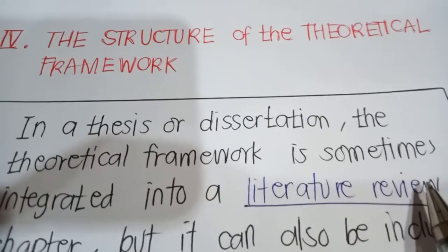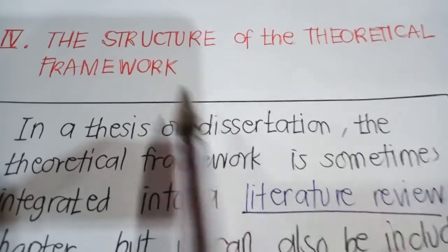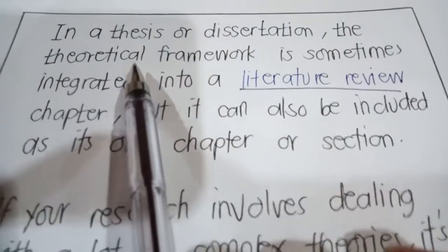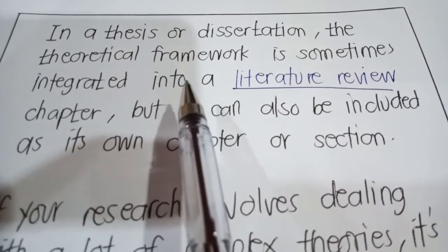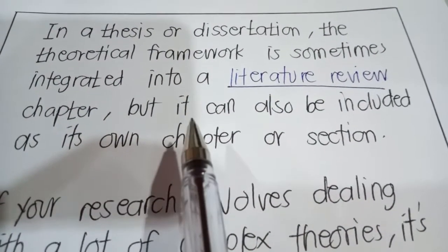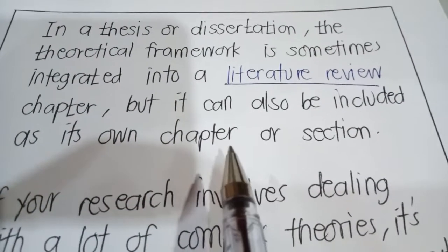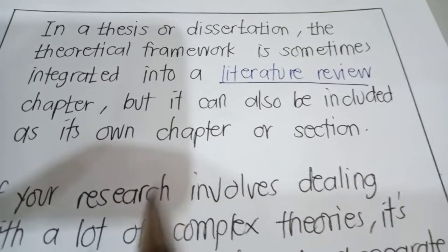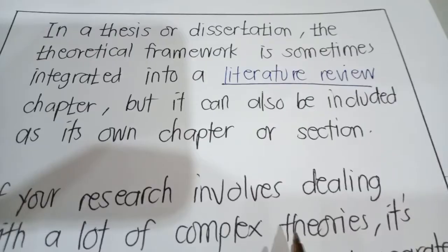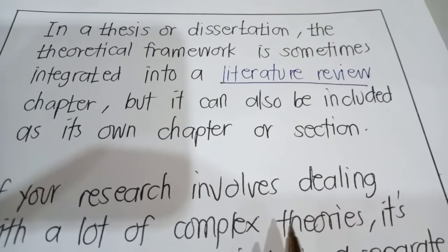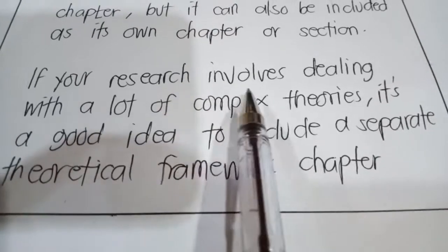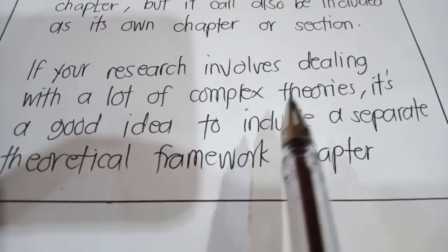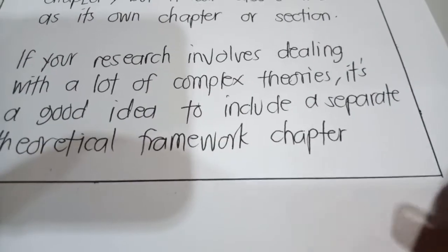The next key area is the structure of the theoretical framework. In a thesis or dissertation, the theoretical framework is sometimes integrated into a literature review chapter, but it can also be included as its own chapter or section. In our case, our theoretical framework is not integrated in a literature review — instead, it has a separate section. If your research involves dealing with a lot of complex theories, it's a good idea to include a separate theoretical framework chapter.